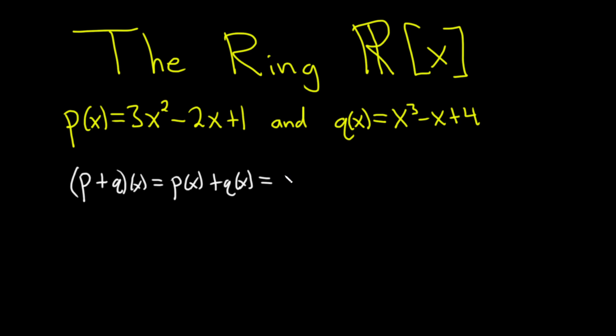And let's see, p(x) is going to be 3x² - 2x + 1, and q(x) is x³ - x + 4.